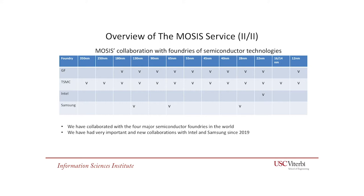On the first column, we can see the foundries that we work with. That includes all four major foundries in the world. GlobalFoundries, which was inherited from IBM, is the first foundry we ever worked with, followed by TSMC, which is also more than 35 years with us. Intel and Samsung are very recent but very important additions to our collaboration. Across the table, we can see the feature size of the technology nodes, all the way from 330 nanometers down to the advanced 12 nanometers.